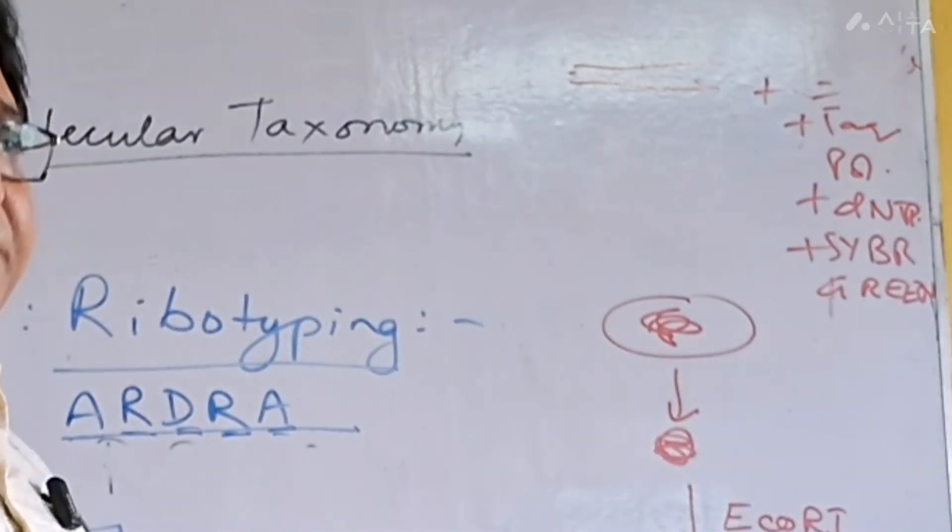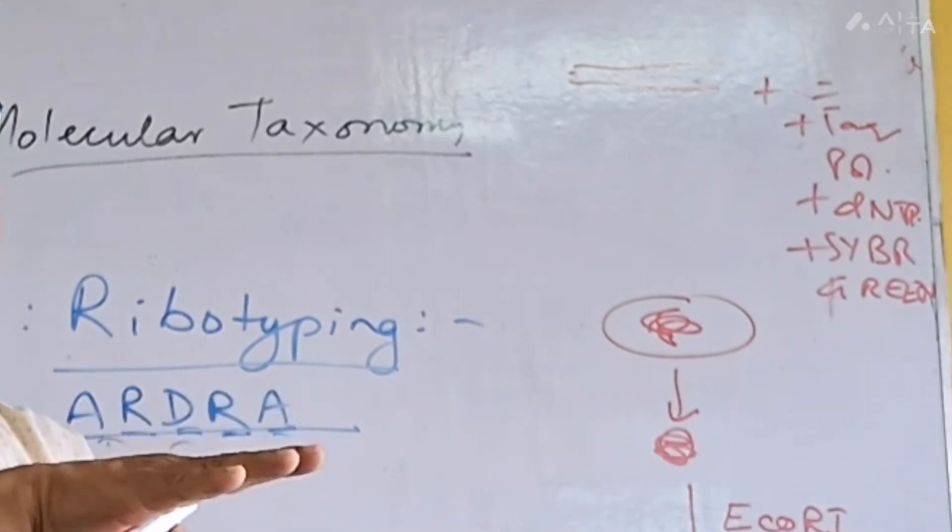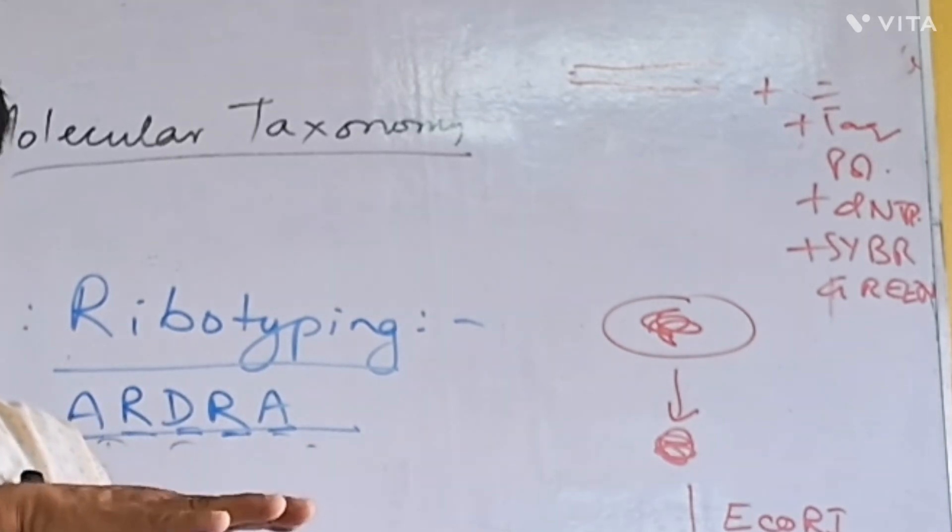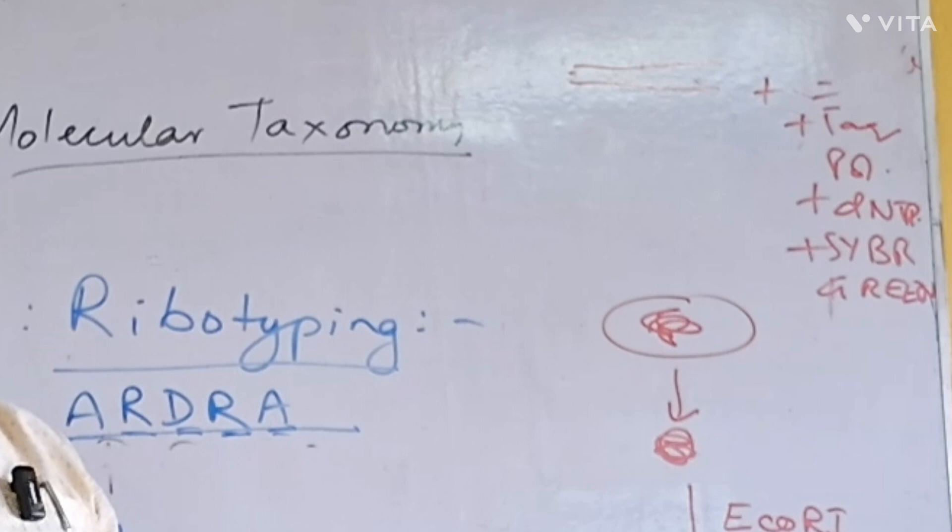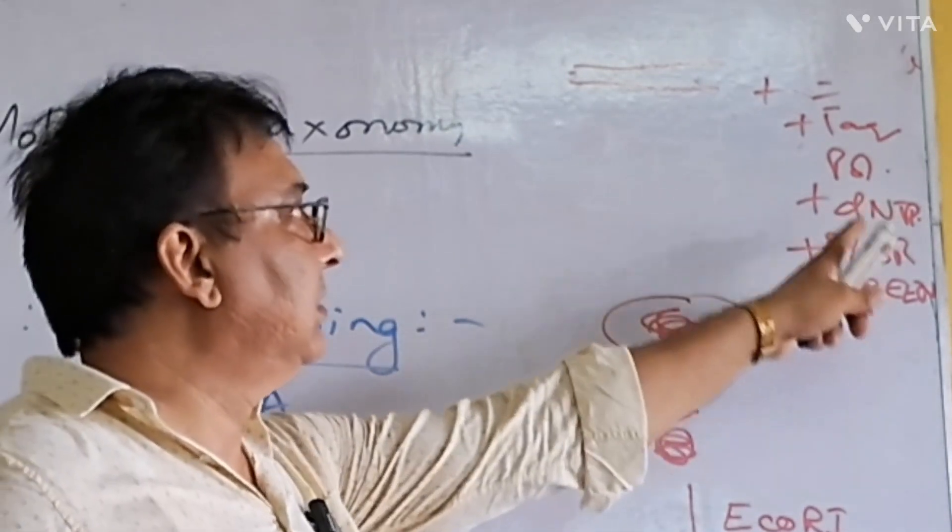PCR machine makes three temperatures. The first temperature is DNA will melt—that will be 94 degrees centigrade. The second temperature will be primer annealing. The primer annealing temperature will be near Tm value.